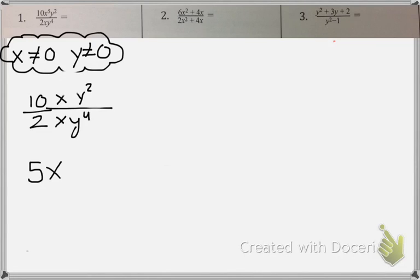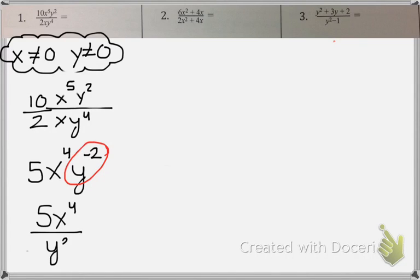I'm sorry, this is supposed to be a 5. 5 minus 1 is 4. And then for my y's, 2 minus 4 is negative 2. We never leave a negative exponent. The way we get rid of it is by flipping it to the bottom. So it becomes 5x to the 4th over y squared.